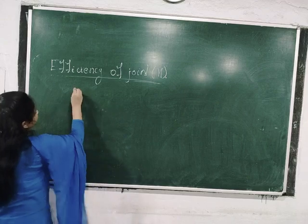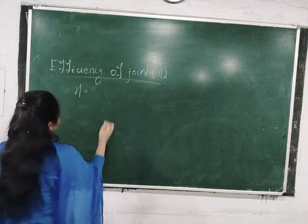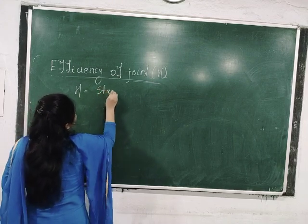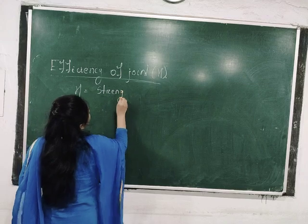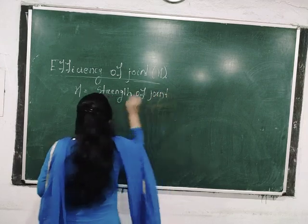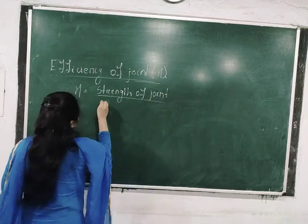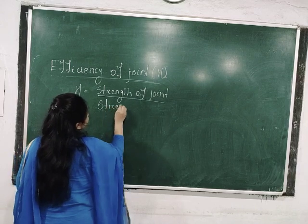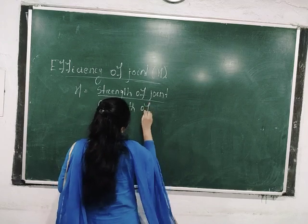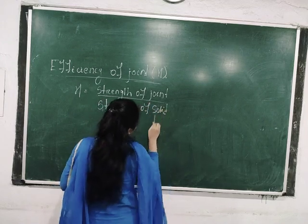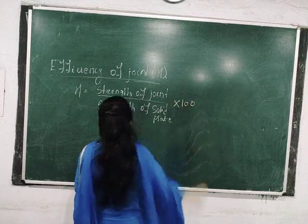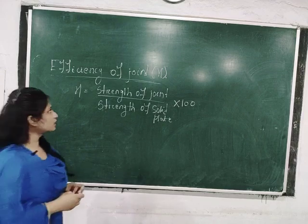The efficiency can be calculated by the ratio of the strength of the joint divided by the strength of the solid plate, multiplied by 100. In this way, we can calculate the efficiency of the joint.